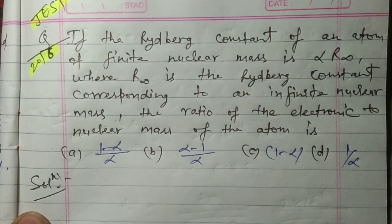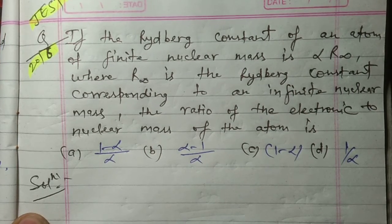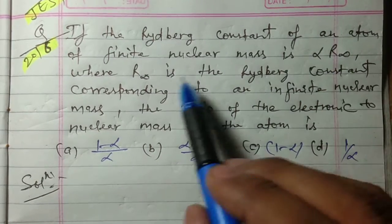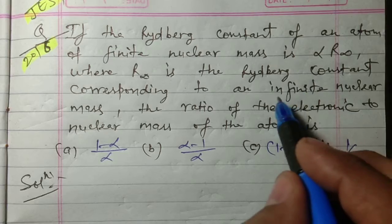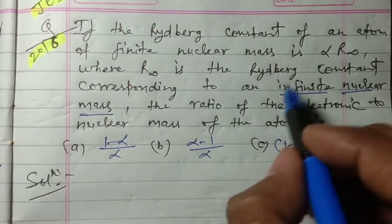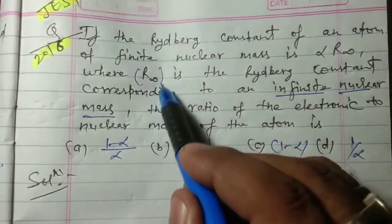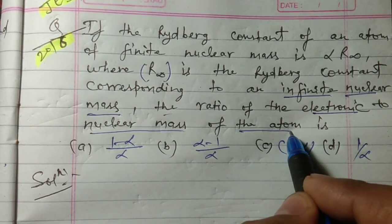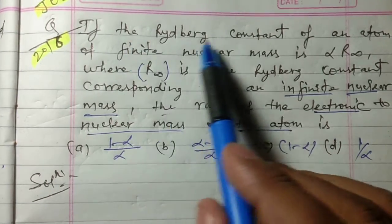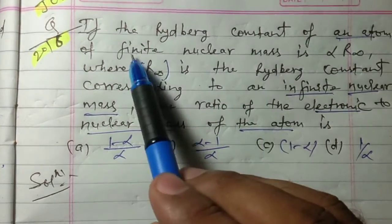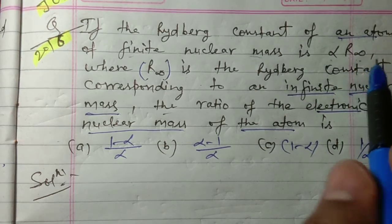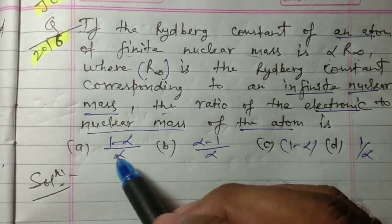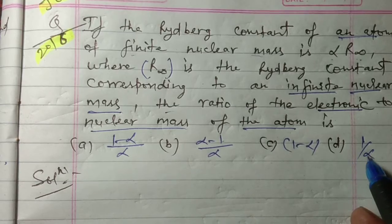Now the next question which is very important, asked in 2016 JEST exam: If the Rydberg constant of an atom of finite nuclear mass is α times R_∞, where R_∞ is the Rydberg constant corresponding to an infinite nuclear mass, find the ratio of the electronic to the nuclear mass of the atom. Options are: (1-α)/α, (α-1)/α, 1-α, or 1/α.